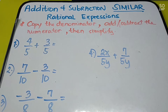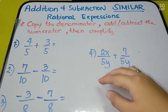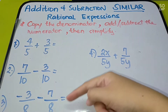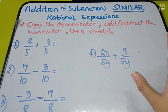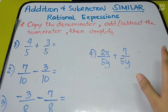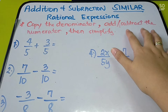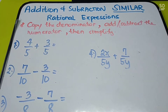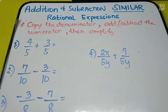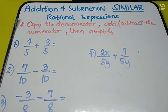When you say similar, we have the same denominator. So the given will have the same denominator. When solving similar rational expressions, we are going to copy the denominator, add or subtract the numerator, then simplify. That's how simple it is when the denominator is similar.